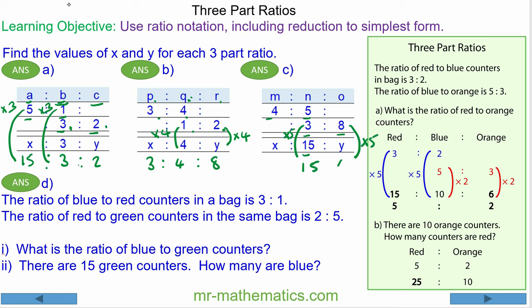8 times 5 makes 40, and 5 times 3 makes 15, so 4 times 3 makes 12. Therefore, the three-part ratio is 12 to 15 to 40.